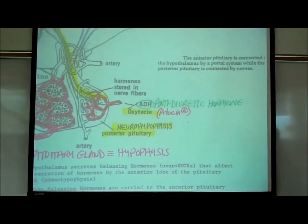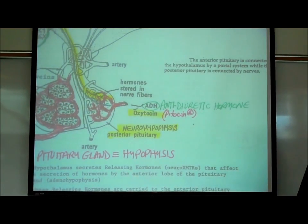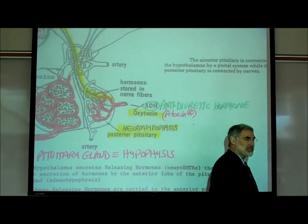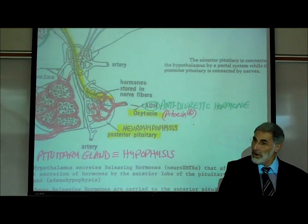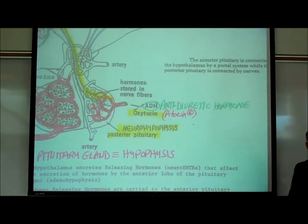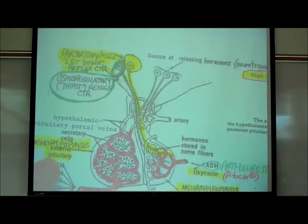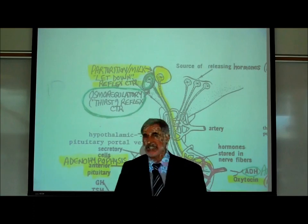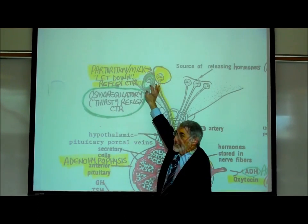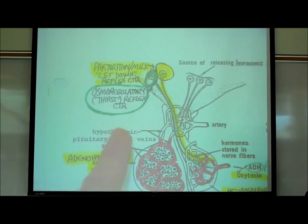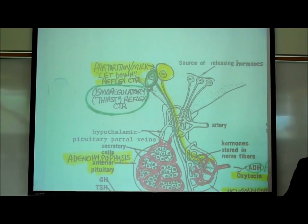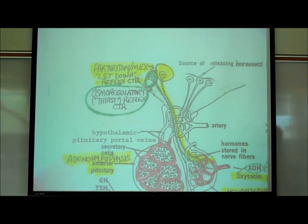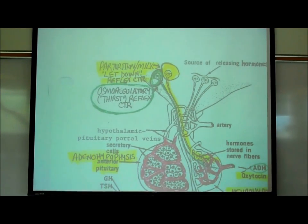ADH stands for antidiuretic hormone. A diuretic makes you excrete urine, so antidiuretic prevents you from urinating. The yellow neurons — the books give them a fancy anatomic term like periventricular nucleus or supra-optic nucleus — we're going to call this area the parturition milk letdown reflex center. Parturition means childbirth, and this is the control center that initiates both childbirth and milk letdown.